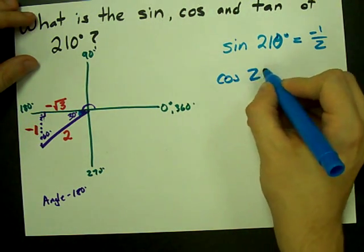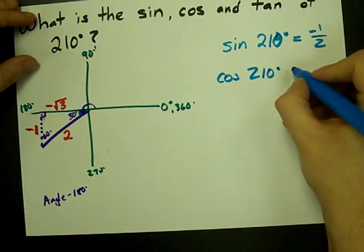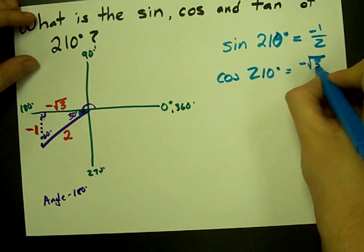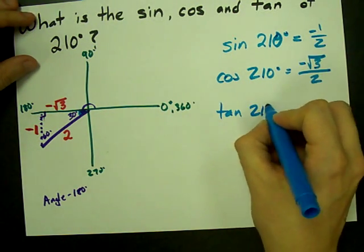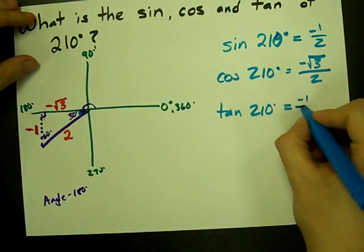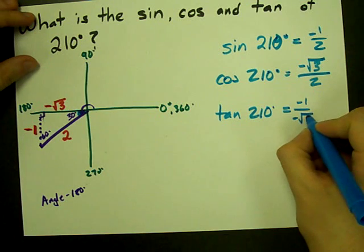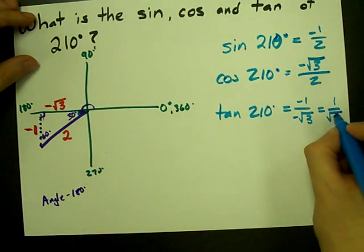If I want the cos of 210 degrees, I take my adjacent over my hypotenuse. Negative root 3 over 2. And if I want the tan, all I have to do is take opposite over adjacent. That's negative 1 over negative root 3. The negatives cancel each other out. That's 1 over root 3.